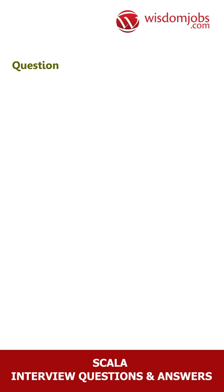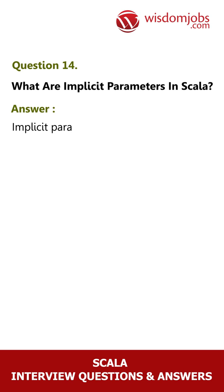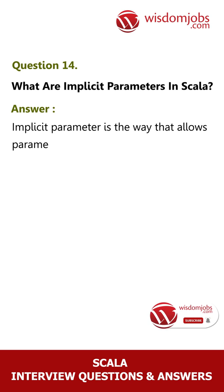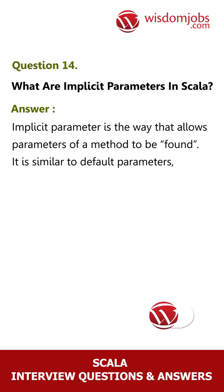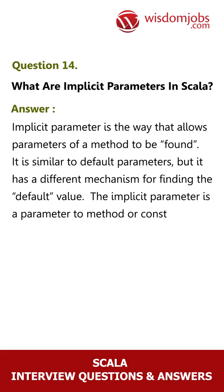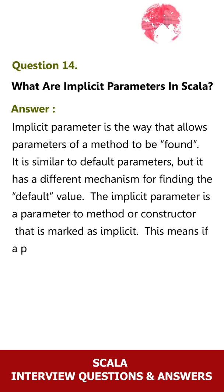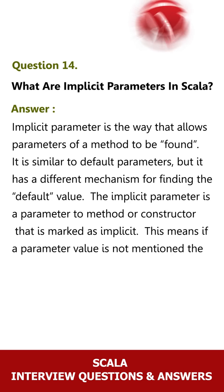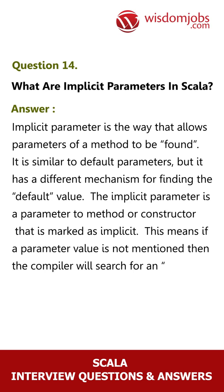Question 14: What are Implicit Parameters in Scala? Answer: An implicit parameter is a way that allows parameters of a method to be found. It is similar to default parameters, but has a different mechanism for finding the default value. The implicit parameter is a parameter to a method or constructor that is marked as implicit. This means if a parameter value is not mentioned, the compiler will search for an implicit value defined within a scope.